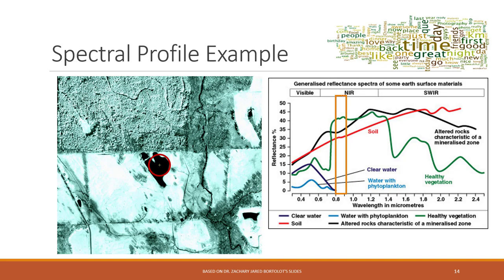Now let's move to another band. In this band, the target area is totally black while all other parts are white. That means the reflection is very, very low. Checking the spectral profile for that band, only water has very low reflection there — it cannot be soil or vegetation, because both have high reflections in this band and would appear bright. So we can now be sure that this spot is water.